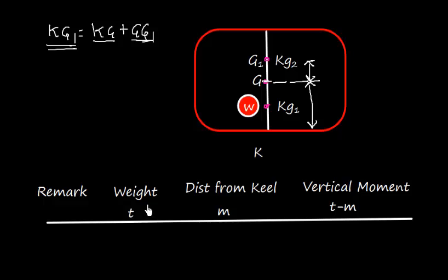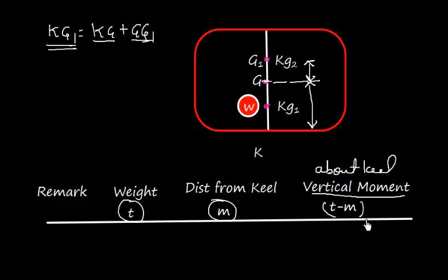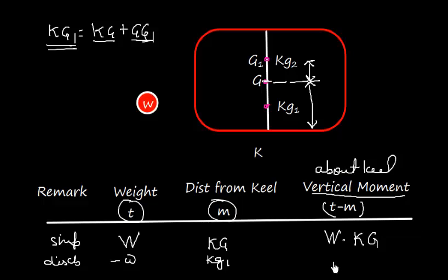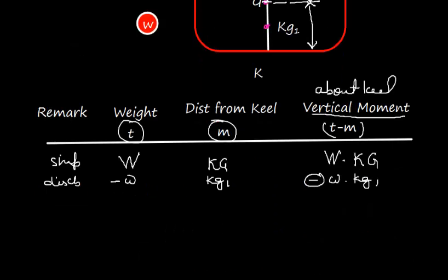Let us set up a table with columns: Remark, Weight, Distance from Keel (in meters), and Vertical Moment (in tonne-metres). For the ship row, the displacement is capital W and the distance from keel is KG, so the vertical moment is W × KG. Next, I discharge the small weight w, so I put minus w and the distance is KG1, giving a vertical moment of w × KG1 which is subtracted.